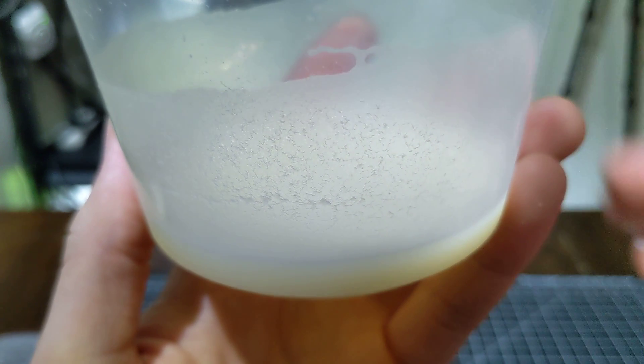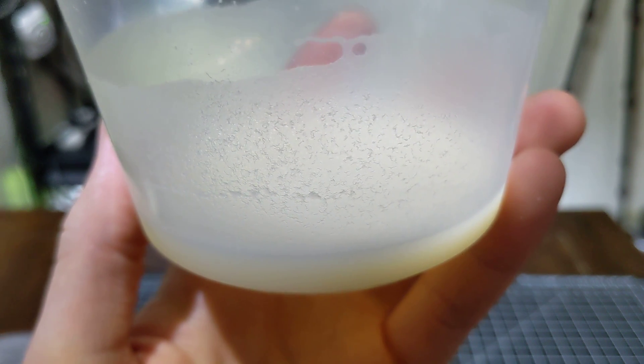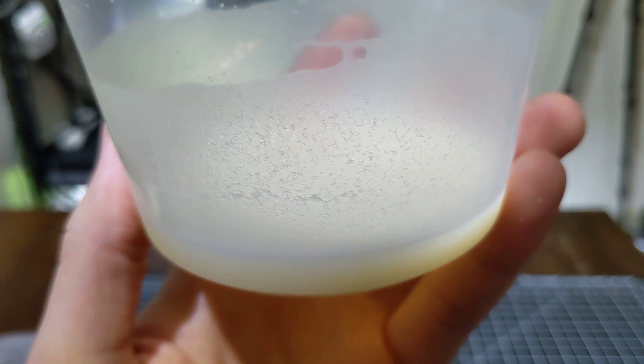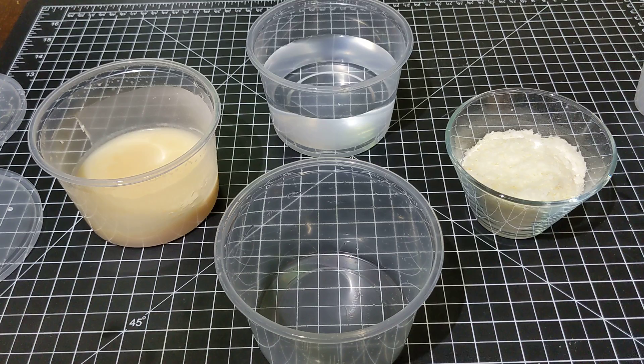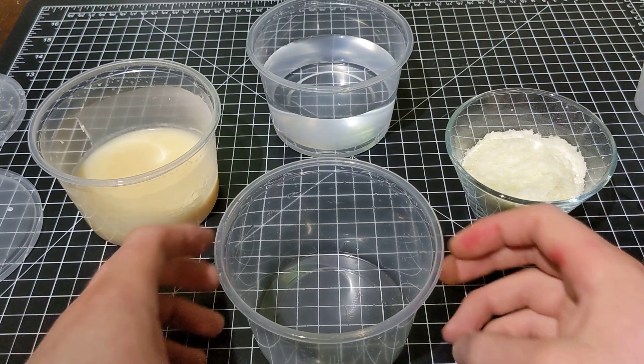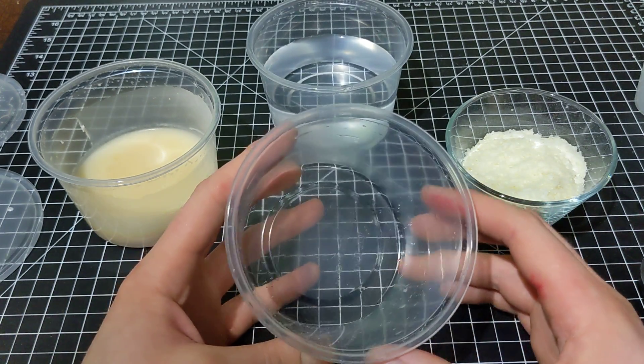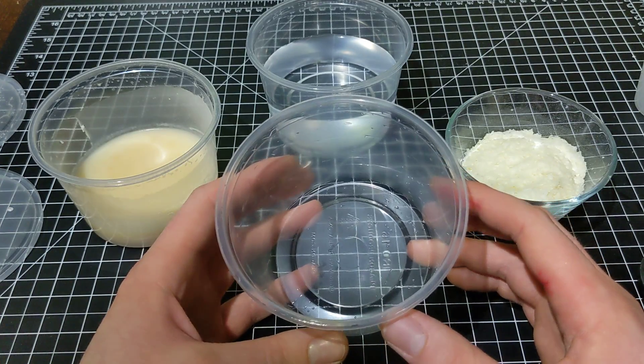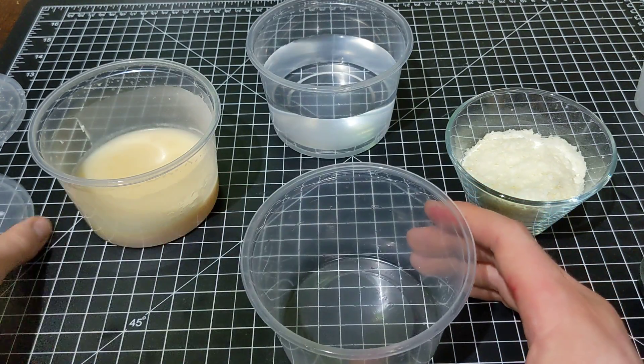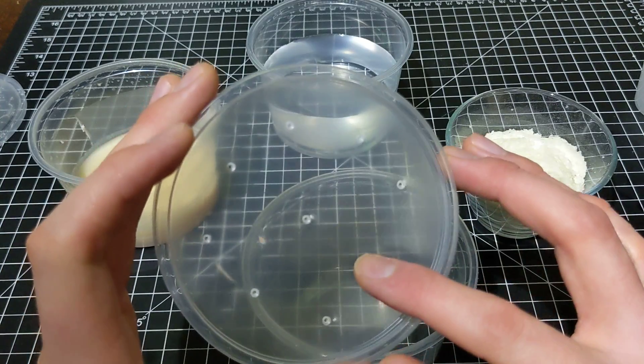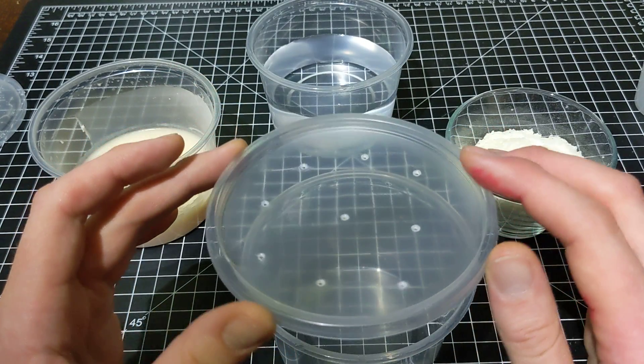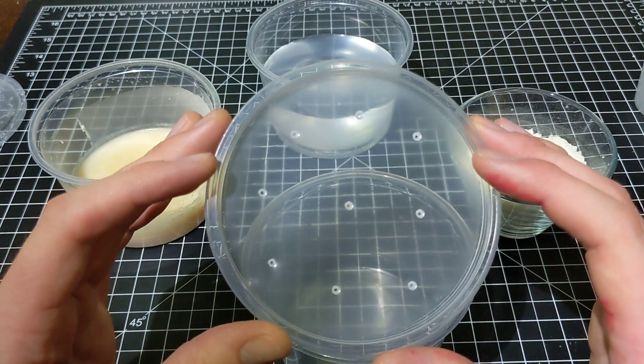So today I'm going to show you how to set up a culture of these. And we're going to need just a few very simple things. You need some kind of container. I've got a 16 ounce deli cup. These work really well. The plastic is pretty thin, easy to poke holes in. You are going to need to let some air in or else the things will suffocate.